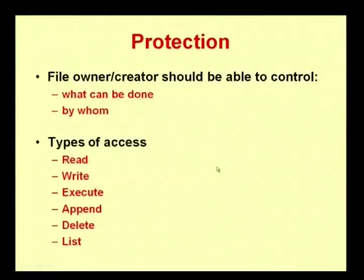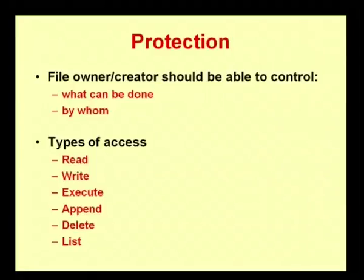Now let us see how files have been protected. Files are protected in many ways. You need to have an owner or creator who has every right to state whether a file can be given read-only access, write access, or full access control. The owner decides what can be done and who can do it. The possible accesses are: read access, write access, execute access, append access, delete access, and list access. These are the accesses that are possible in a file system.